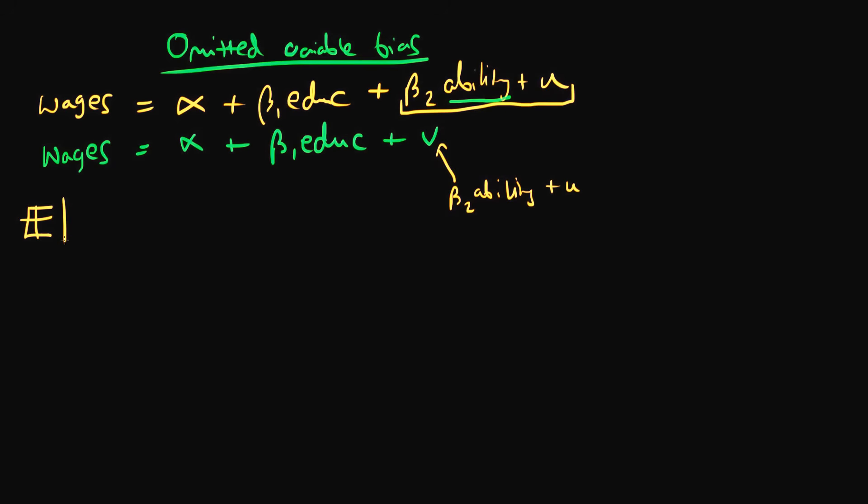Now let's think about what the zero conditional mean of errors assumption actually means. Well it means that the expectation of v, our estimated error here, given an individual's education, the x variable in this case, has got to be equal to zero. And we said another way of writing that is that the covariance between v and an individual's level of education has got to be equal to zero.